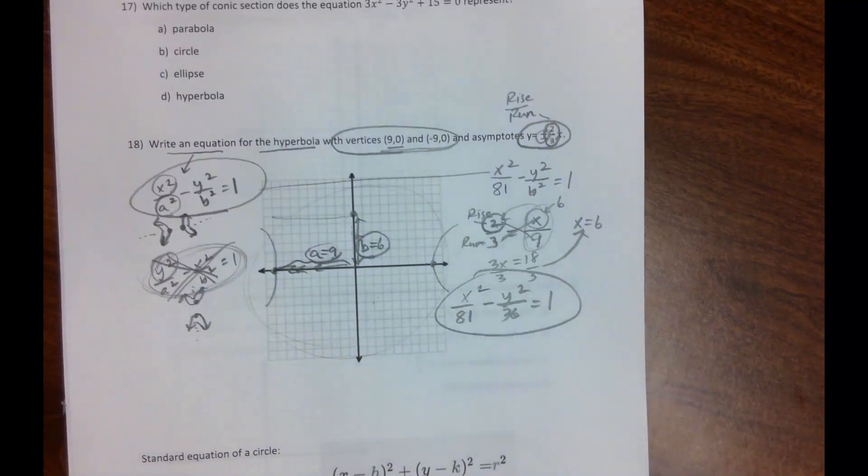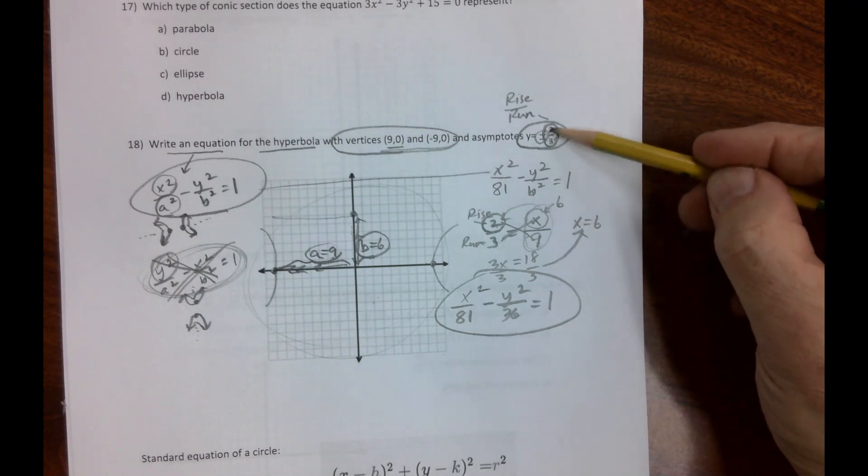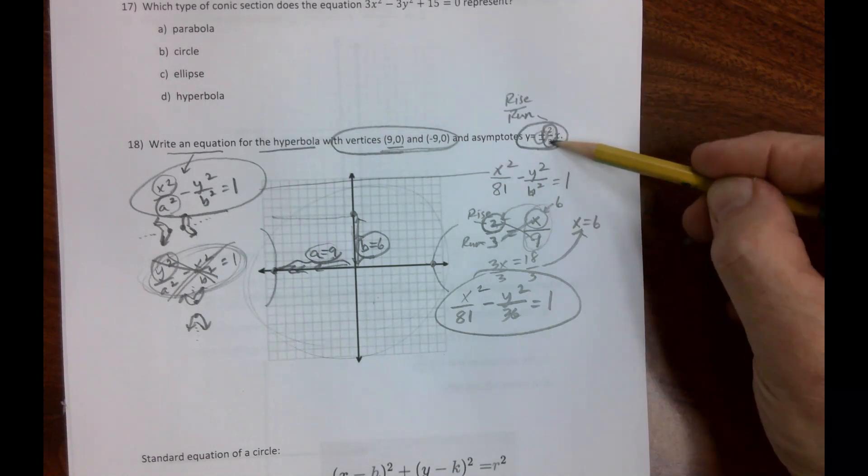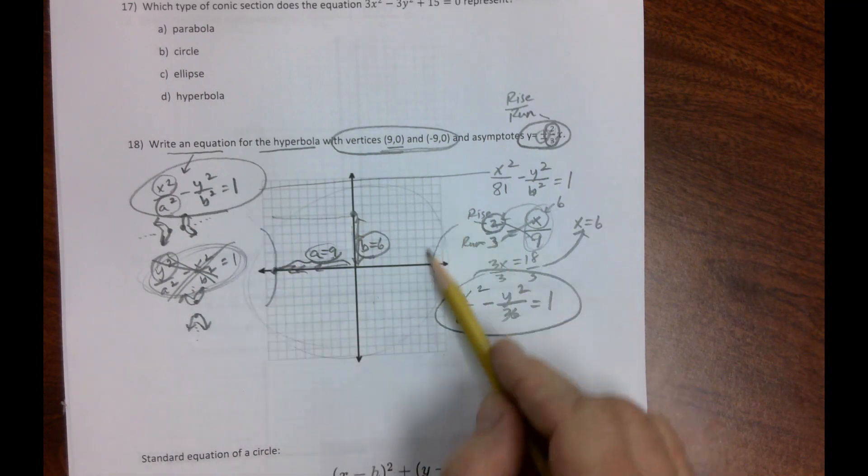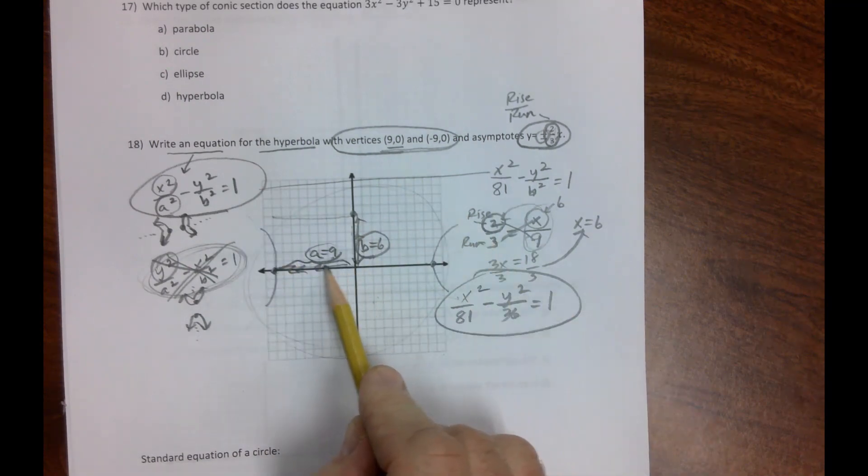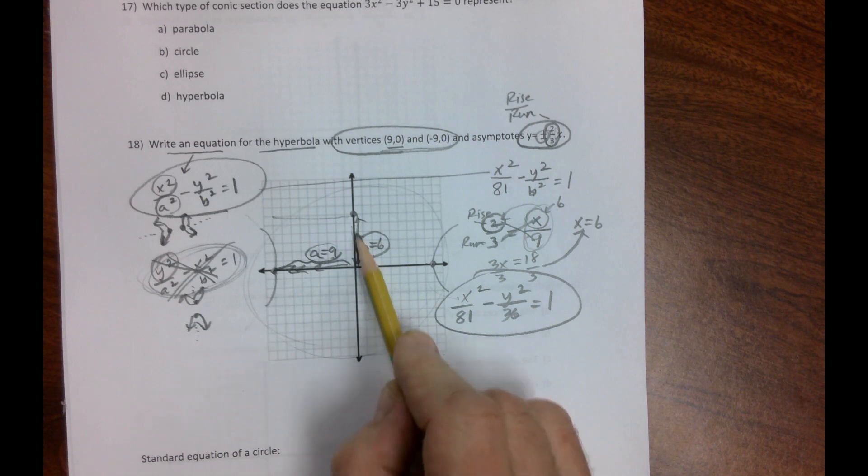Don't forget: when they give you the asymptote, it's always rise over run. In this drawing, because our hyperbolas go this way, our a is our run and our b is our rise.